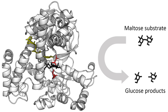For example, flavin and heme cofactors are often involved in redox reactions. Enzymes that require a cofactor but do not have one bound are called apoenzymes or apoproteins. An enzyme together with the cofactors required for activity is called a holoenzyme. The term holoenzyme can also be applied to enzymes that contain multiple protein subunits, such as the DNA polymerases, where the holoenzyme is the complete complex containing all the subunits needed for activity.